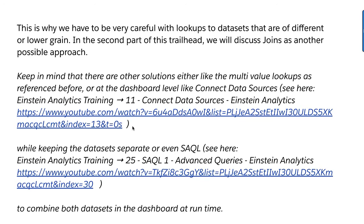This is why we have to be very careful with lookups. When building a data set using single lookups to match one record, you want to start with the lowest grain. There are other solutions: if you want to use multi-value lookup, if you want to use Connect Data Sources instead of combining them on the data layer, or even SAQL. You can check other chapters in this playlist. But for now we're focusing on understanding how the lookup runs, the lowest grain, and we'll cover joins next.